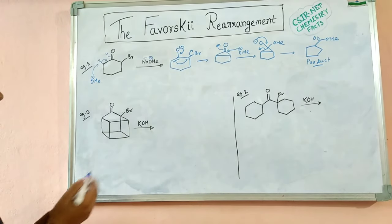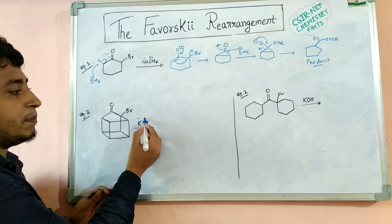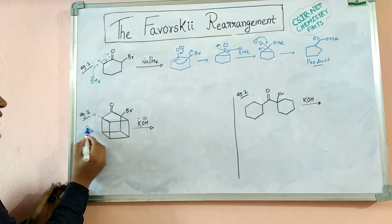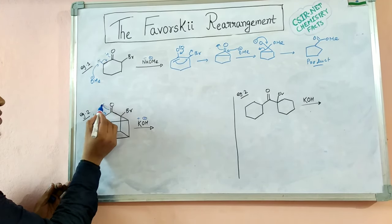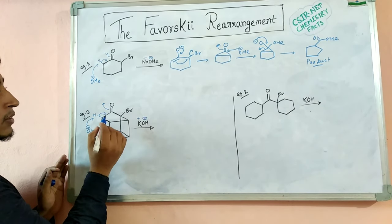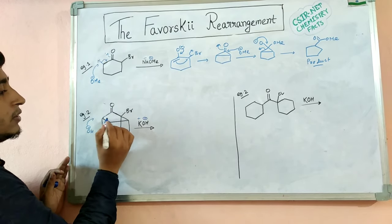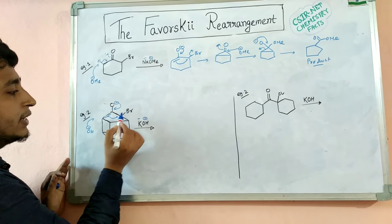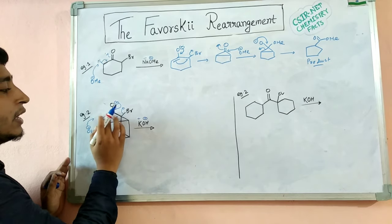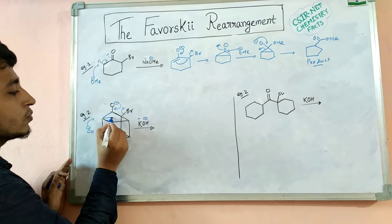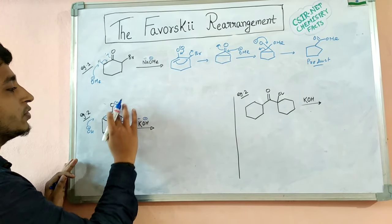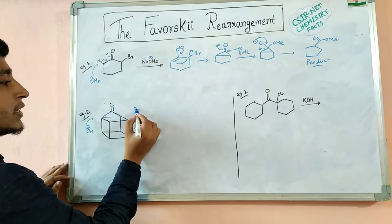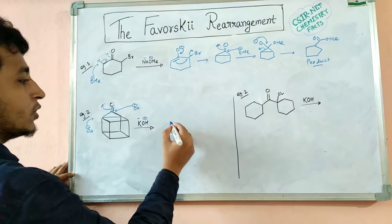In example 2, the substrate is treated with KOH — K⁺ and OH⁻. This is the acidic proton, so OH⁻ abstracts this proton, the electron pair comes here, and this bond opens up — forming the enolate. The negative charge comes back, attacks here, and Br⁻ leaves — forming a three-membered cyclic keto intermediate. The OH⁻ further attacks the carbonyl carbon of the cyclopropanone and the ring opens up to give this intermediate.